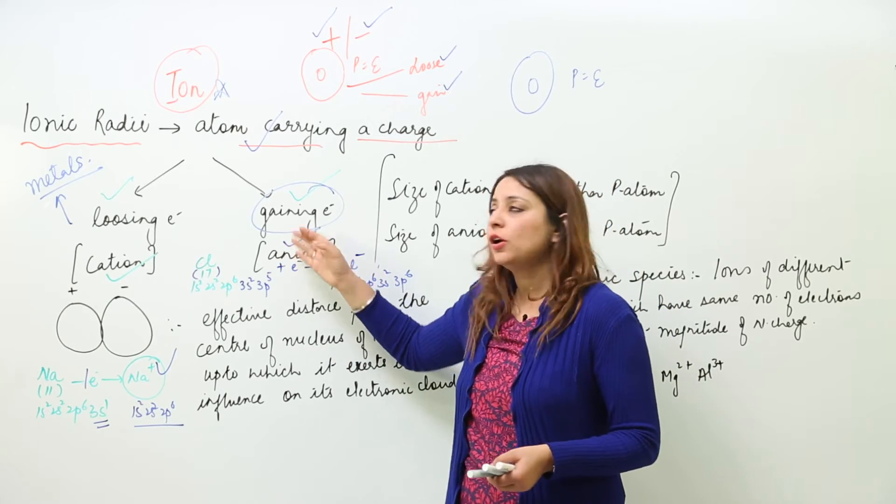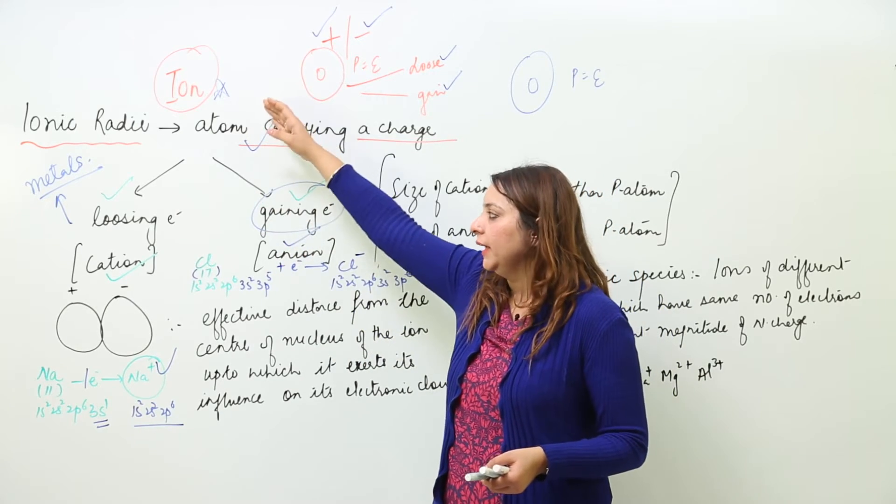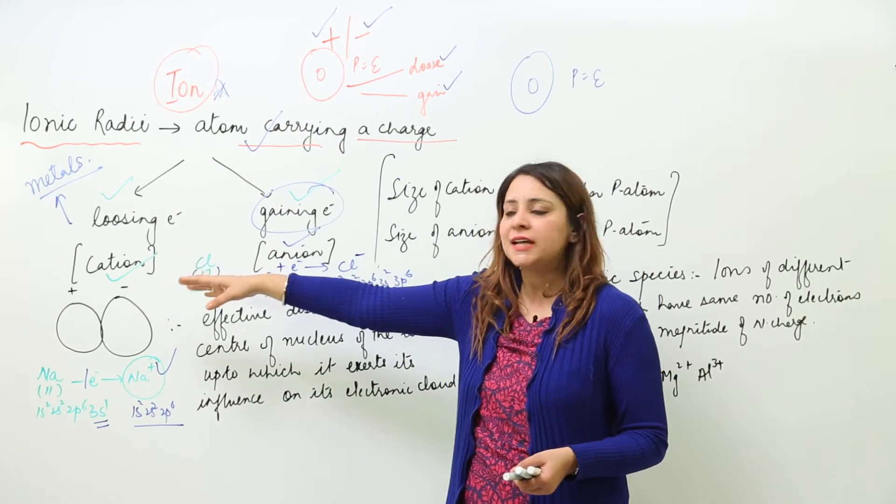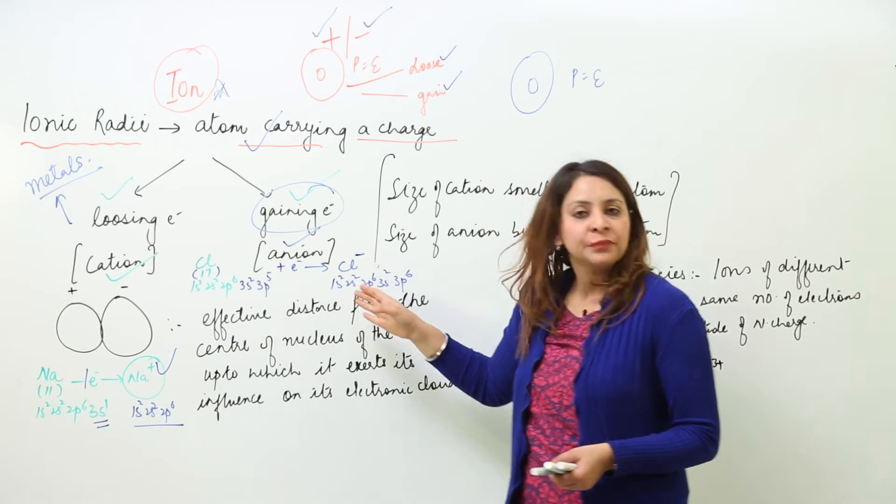When chlorine gains an electron it acquires a negative charge, forming an anion. So it is clear what an ion is and why atoms lose or gain electrons to achieve stability. After losing or gaining electrons, the atom becomes an ion — either a cation or an anion.